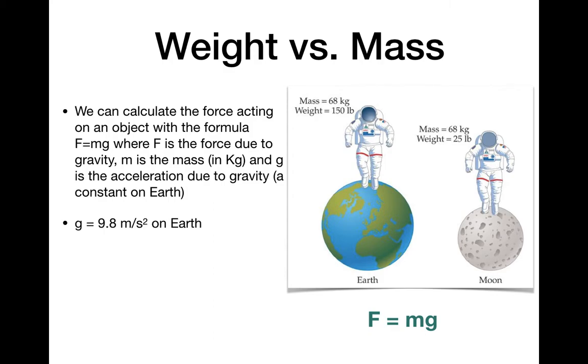On Earth, gravity is 9.8 meters per second squared, so put that down in your notebook as well. It's a constant you need to memorize. On the moon it's only 1.6 meters per second squared.